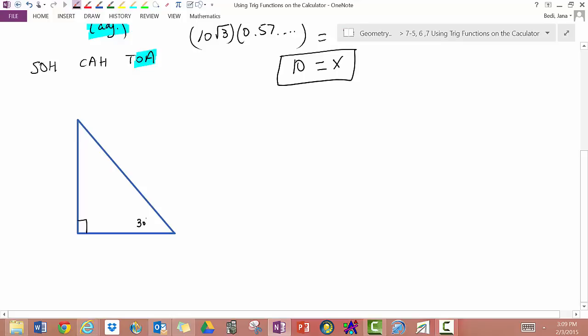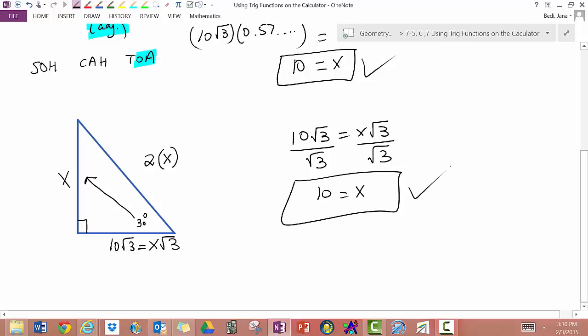So this is 30 degrees. This is 10√3. And this is x. If I remember my 30-60-90 rule, the shortest side is opposite 30 degrees. The hypotenuse is going to be 2 times the shortest side. And the long leg is the short leg times √3. So now I have 10√3 equals x√3. Divide by √3. Divide by √3. And you get 10 equals x.